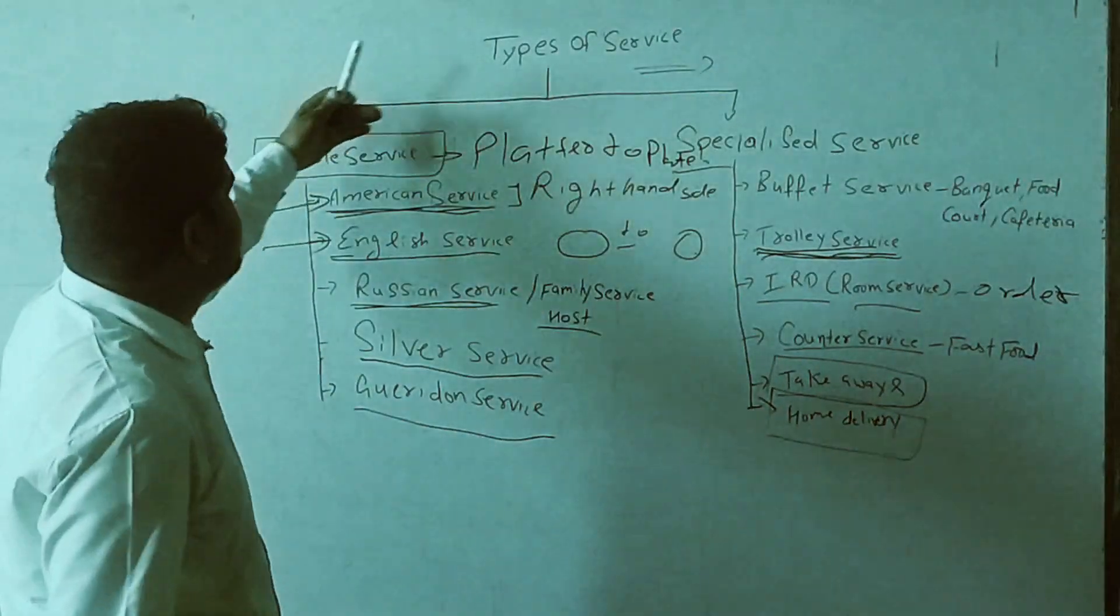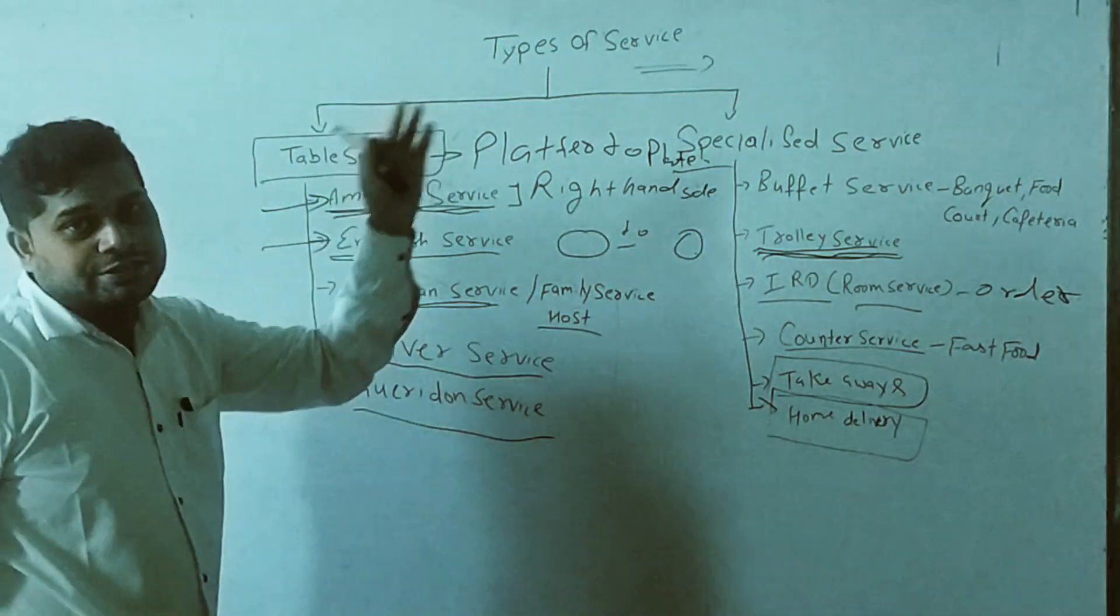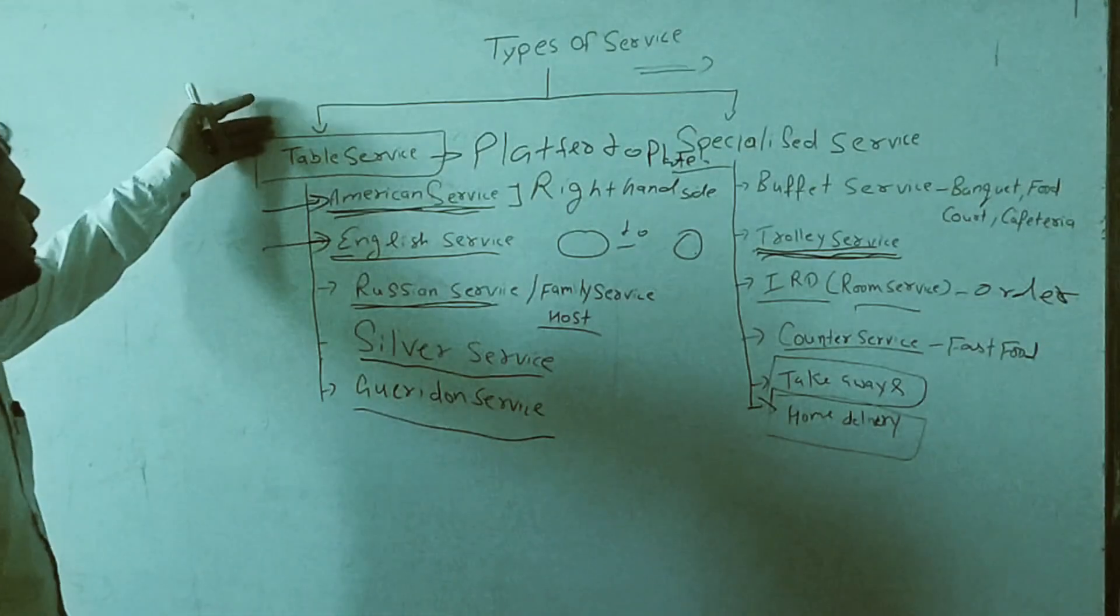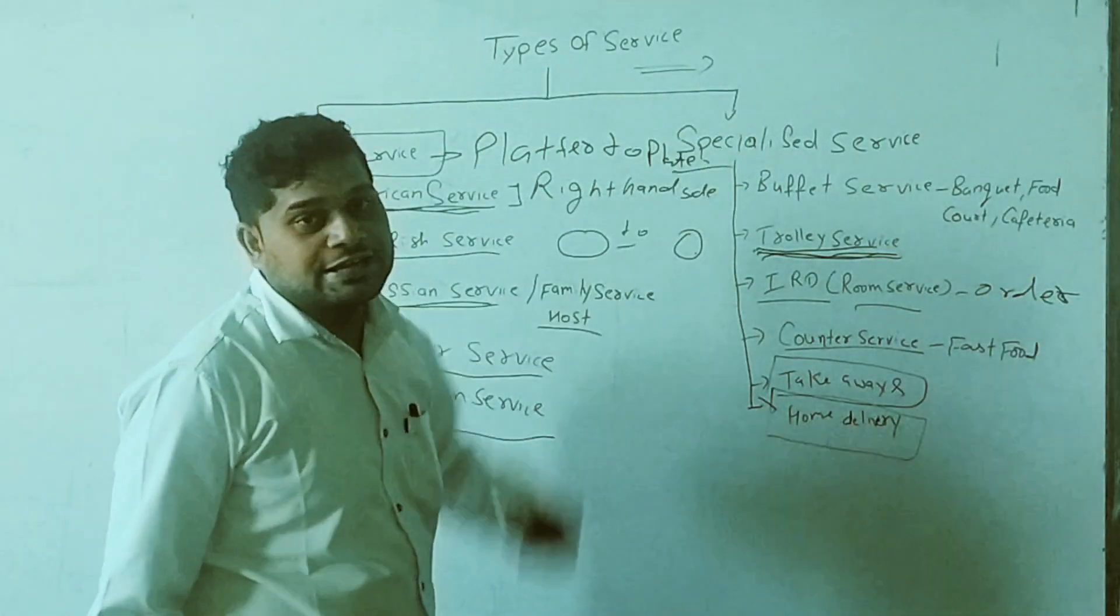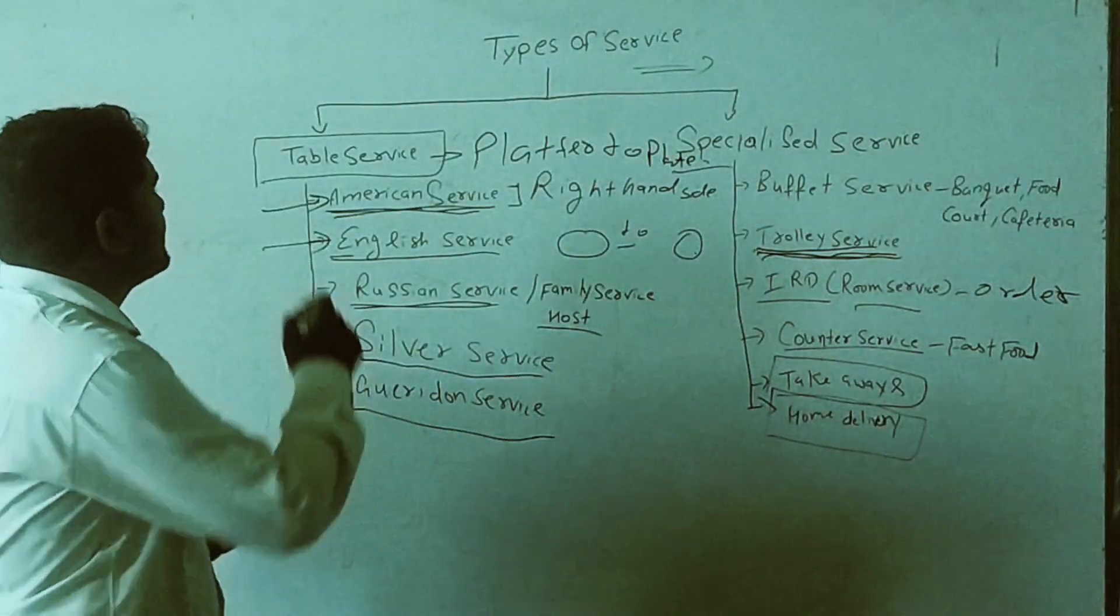Basically in the hospitality industry, we can serve food in various types. There are some common services like table service and specialized service. We can categorize these into two types.